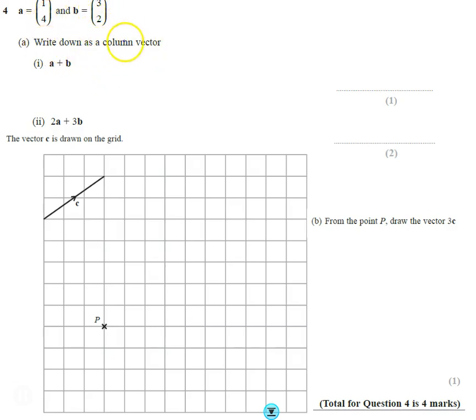We want to write down a + b as a column vector. The advantage of column vectors is when they're written like this next to each other, you can just read along the top and read along the bottom.